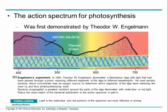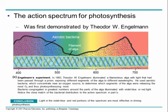Here's the experiment done by Theodore Engelman. He took algae, split light through a prism, and exposed the algae to all these different wavelengths of light. These algae were exposed to purple and blue. He measured how much oxygen the algae were producing using aerobic bacteria to determine which segments of algae were releasing the most oxygen and thus photosynthesizing the most, based on which wavelengths of light. The bacteria congregated where oxygen was highest.